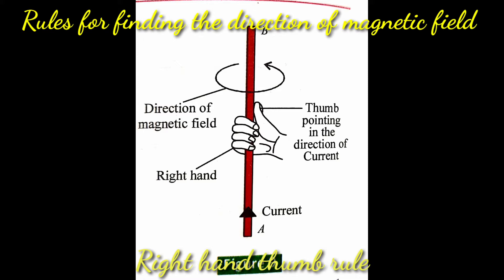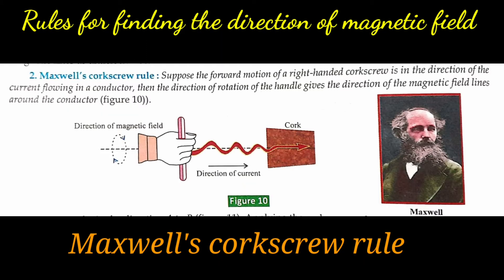In the given figure, the current flows in a conductor from A to B. The thumb of the right hand points in this direction, and the curl of the fingers gives the direction of magnetic lines as anti-clockwise. Maxwell's corkscrew rule states that if the forward motion of a right-handed corkscrew is in the direction of the current, then the rotation of the handle gives the direction of the magnetic field lines around the conductor.